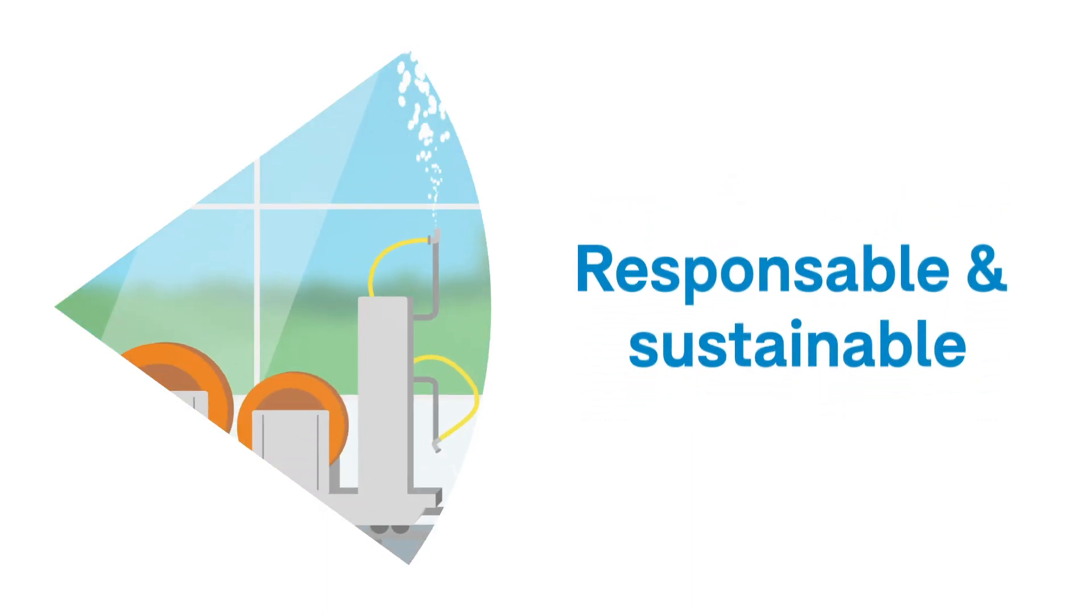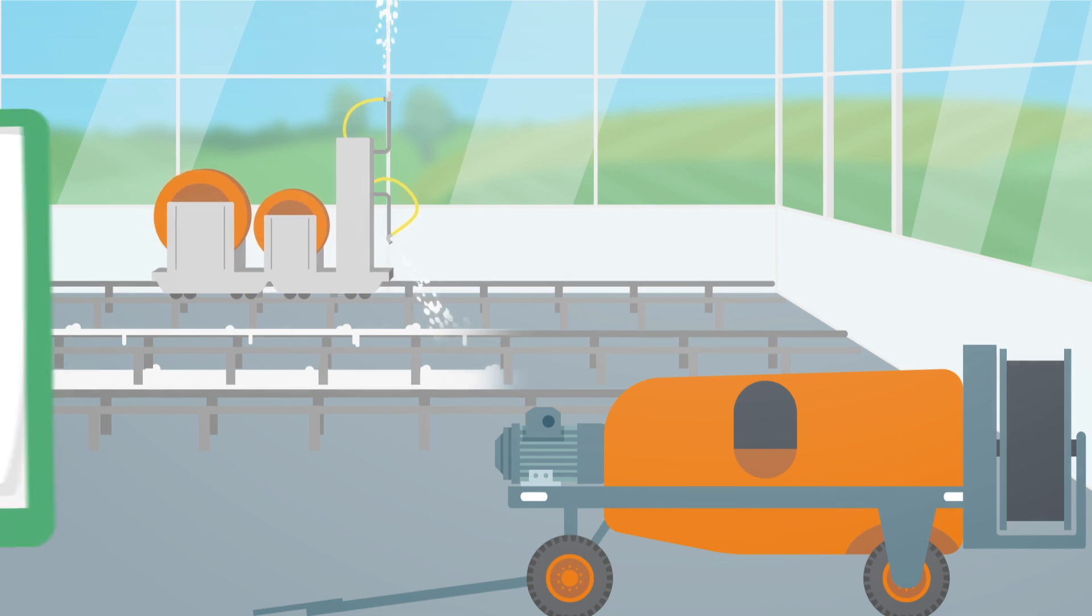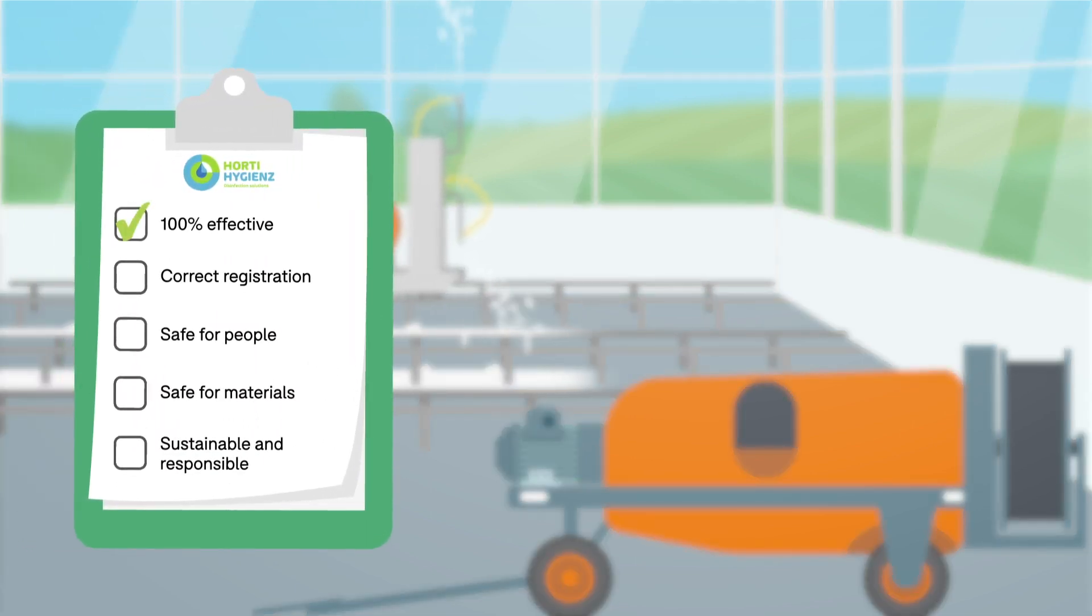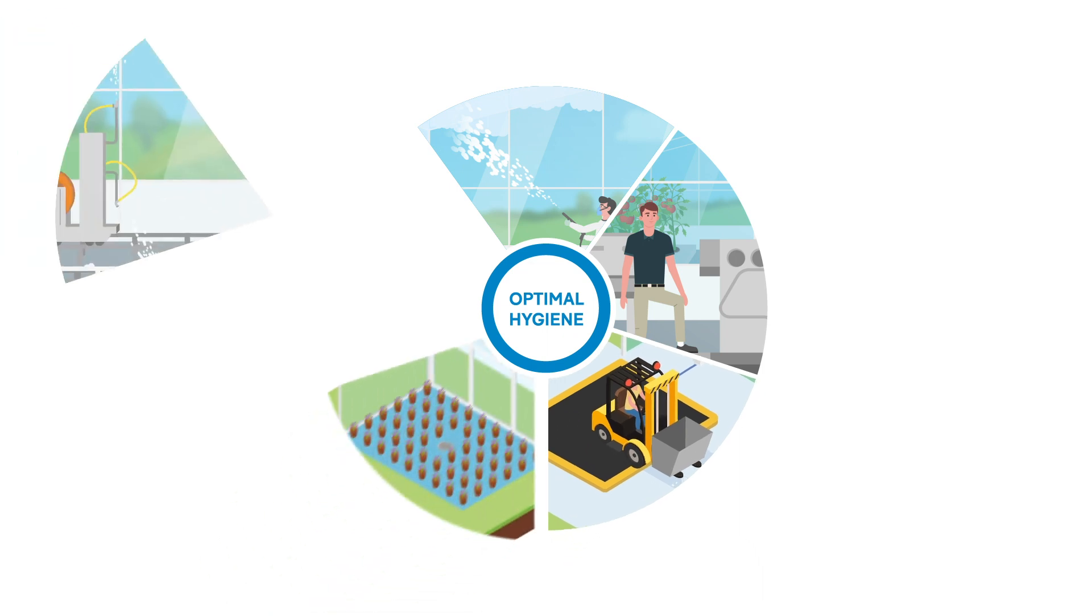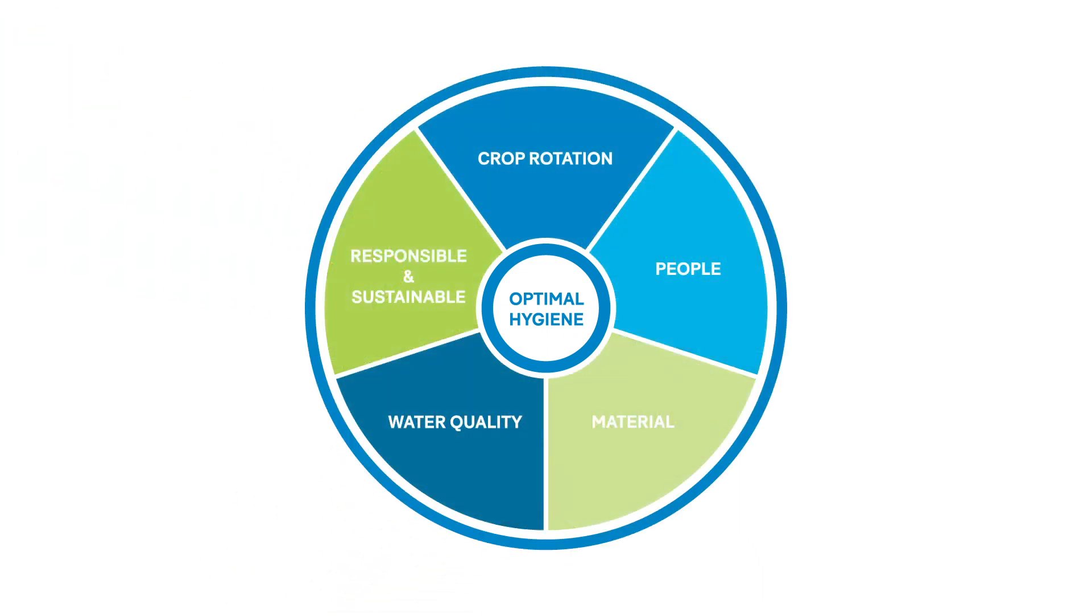The grower wants a safe environment for employees and needs to meet all the requirements of buyers and the authorities. That is why all Horti Hygienes solutions are 100% effective, have been correctly registered, are safe for people, safe for materials and are sustainable and responsible. These five pillars form the foundation for Horti Hygienes and deal with the increasing disease pressure present at greenhouse companies.